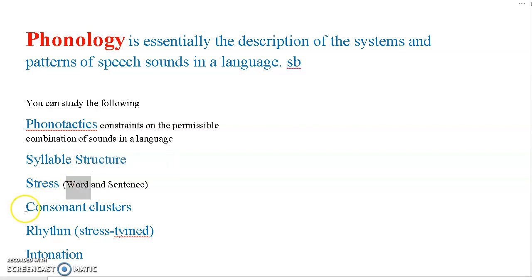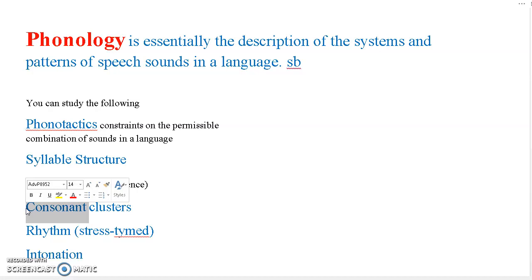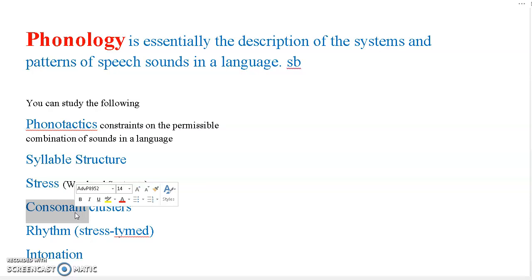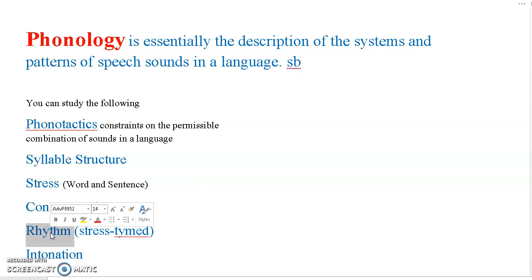We can also study consonant clusters — which combinations of consonants can come together at the beginning or end of a syllable. One basic problem is that learners often insert a vowel between two consonants. For example, 'class' has two consonants 'cl', but some students say 'iclass', inserting a vowel sound between them.